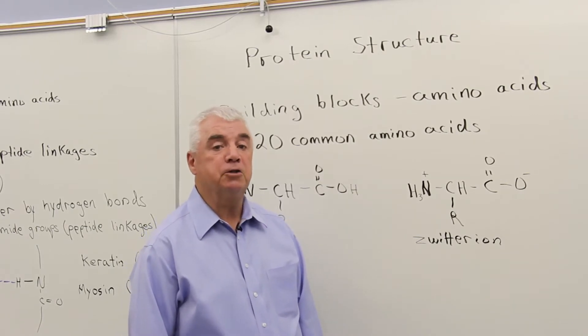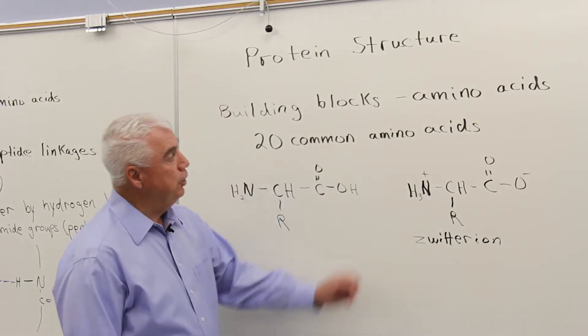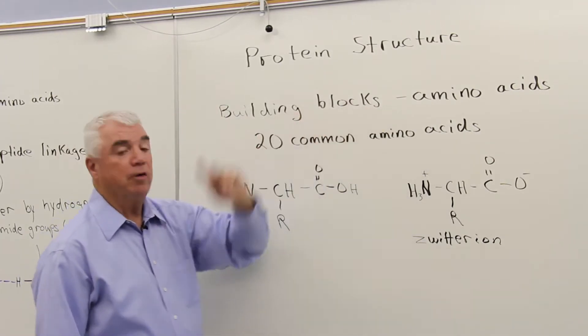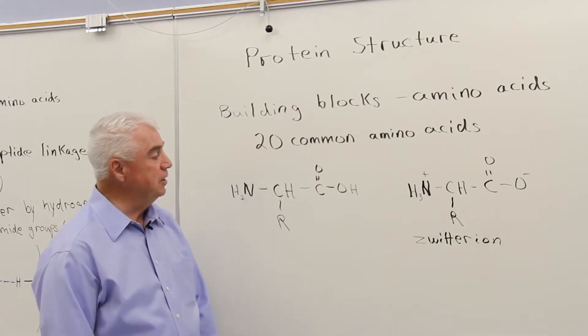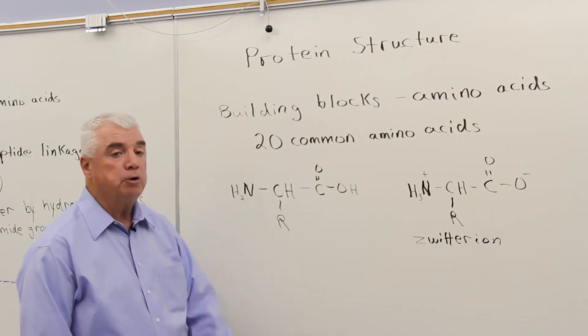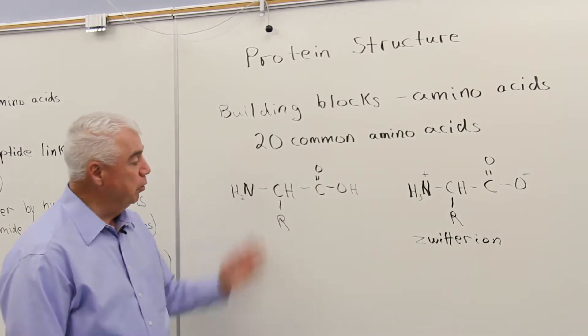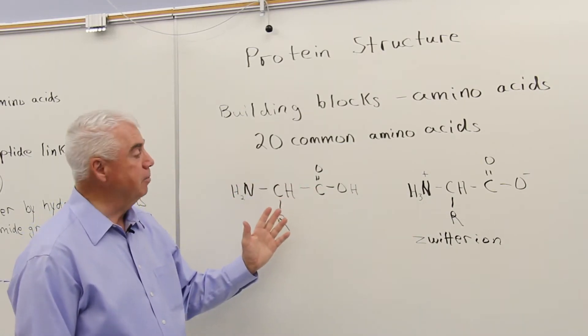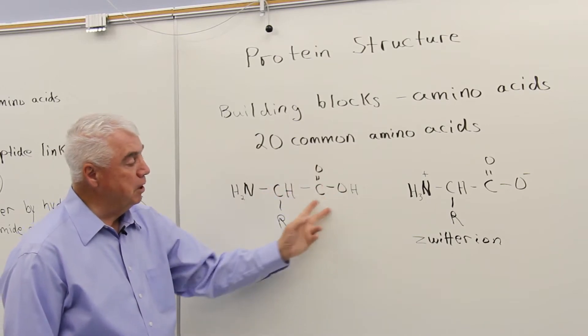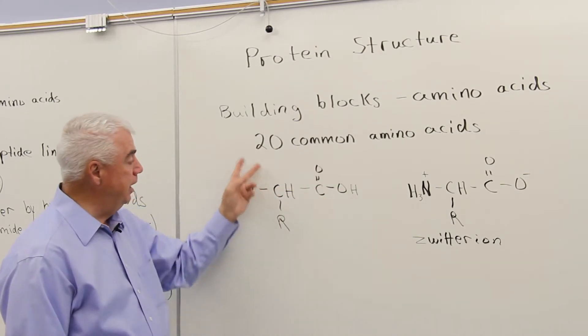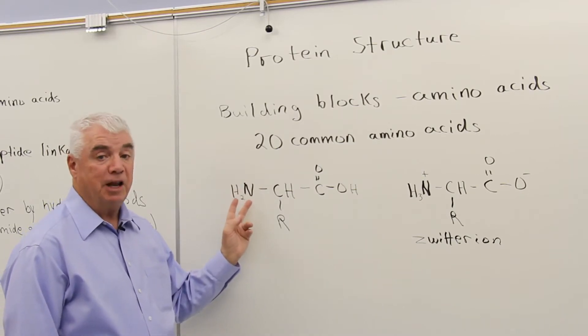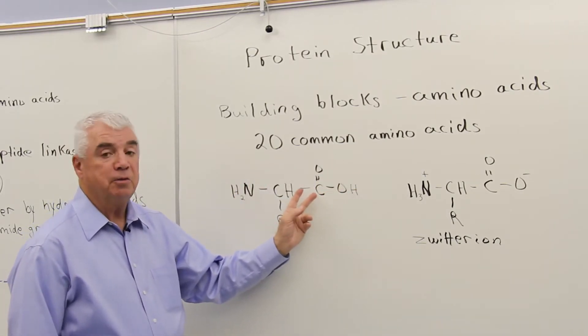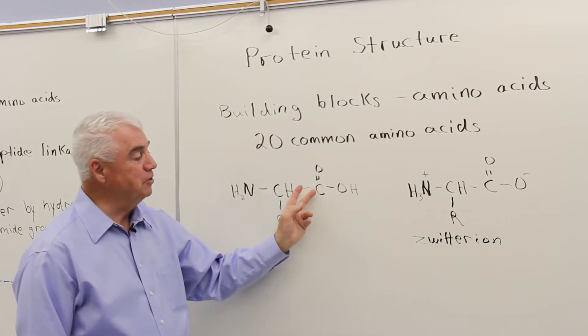Let's talk about protein structure. You know that amino acids are the building blocks of proteins, that there are 20 common amino acids. And here I've drawn the structure of an amino acid, a relatively small organic molecule. It has a carboxylic acid portion and an amino portion. The amino acts like a base, and the carboxylic acid portion acts like an acid.